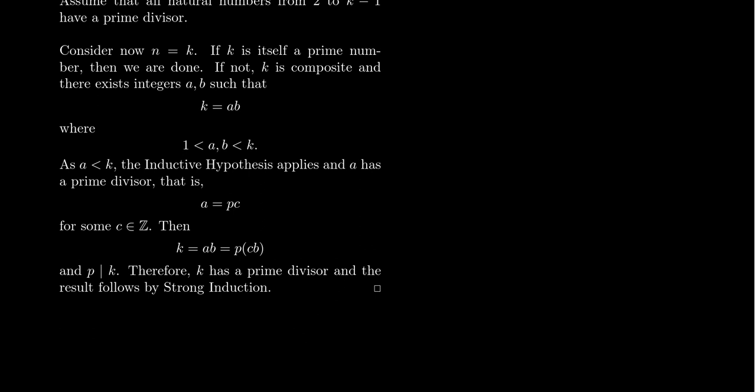In this argument, I used the inductive hypothesis on the number a. I know a sits somewhere between one and k, but I don't know exactly where. This is why it was extremely useful to have the hypothesis cover all numbers between two and k−1 — because I don't know where a landed. Strong induction gives that to us.